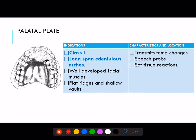Next is palatal plate, used in Class 1 edentulous arch because Class 1 is bilateral edentulous and there are no posterior teeth present. In this case, the prosthesis is tissue-supported, so we need to cover as much area as possible to dissipate occlusal forces. Palatal plate is mostly used in Class 1 edentulous arches, long span edentulous arches especially, with well-developed facial muscles and flat ridges and shallow walls. Characteristics: it transmits temperature changes, and may cause speech problems and soft tissue reactions, as it covers most of the palatal area.